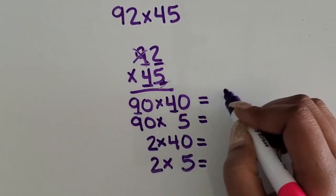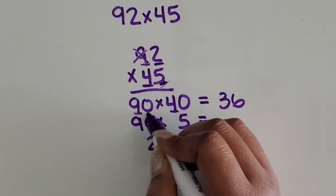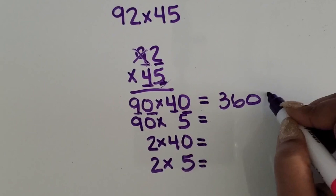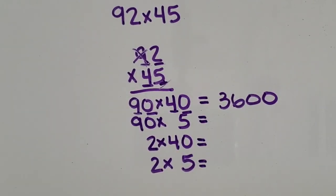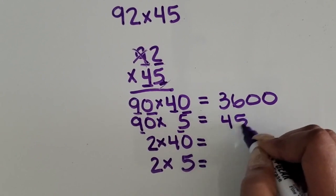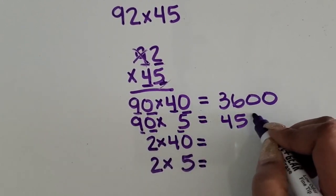So nine times four, 36, 10 times greater than that is 360, 10 times greater than that is 3,600. Nine times five is 45, 10 times greater than that is 450.